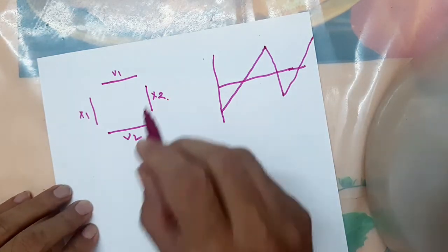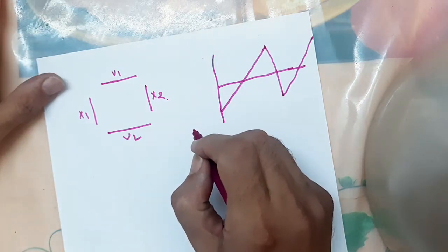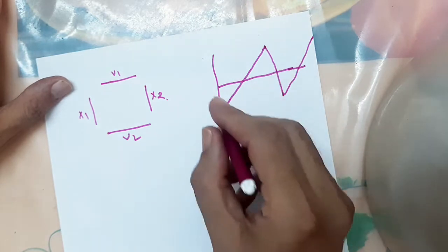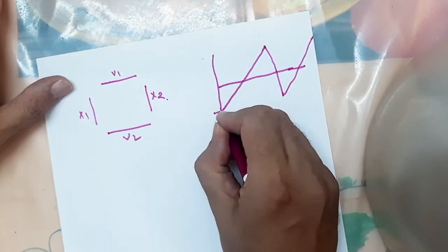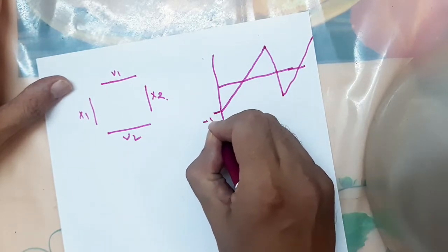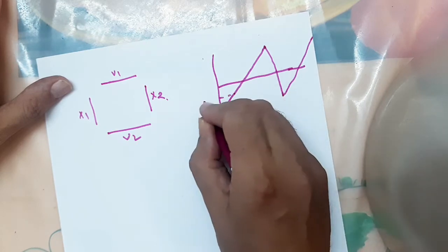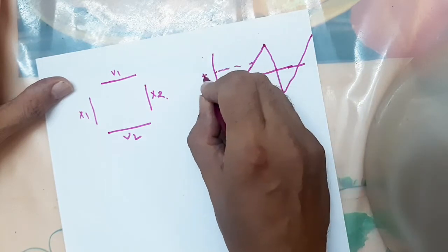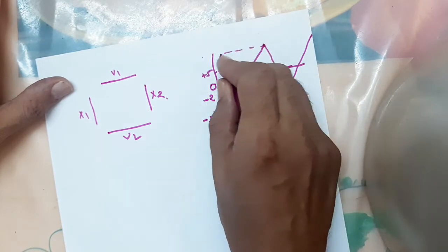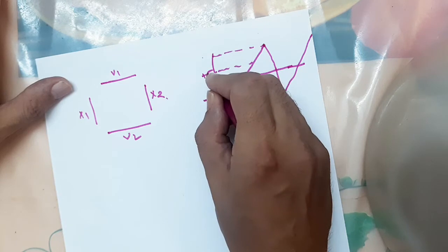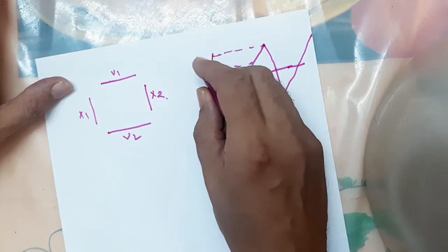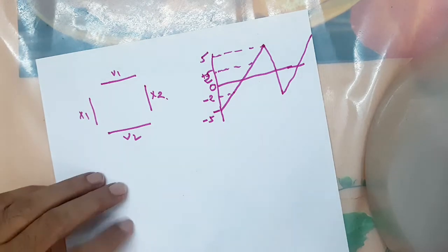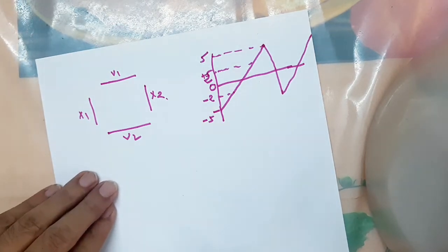This waveform is generated by the time base generator. If we are applying this type of signal, we consider: this is minus 5, this is minus 2 volt, this is 0 volt, this is plus 2, and this is plus 5 volts — these are the voltage levels of the sawtooth wave applied between X1 and X2.